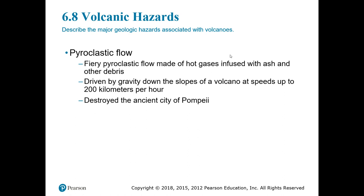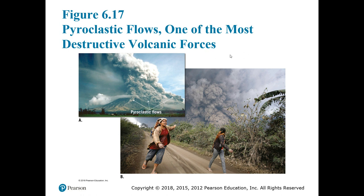This pyroclastic flow is what destroyed the ancient city of Pompeii — that was Mount Vesuvius. We'll see a couple of pictures from that in today's presentation. In image A, from your textbook, we see these pyroclastic flows streaming down the sides of composite volcanoes. Composite volcanoes have magma that's typically higher in silica and can generate these flows of material down the slopes.